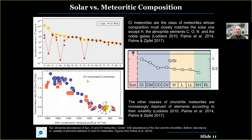This trend means that CV chondrites formed in a hotter environment than CI chondrites, so elements condensing at higher temperatures are more abundant than those condensing at lower temperatures. Extending the trend to all chondrite classes, the abundance of oxygen relative to silicon decreases the closer the meteorites formed to the sun. The colder the environment, the more primitive the material and the closer the ratio is to the solar value. However, the sun plots higher than CI chondrites, meaning there is a fraction of oxygen not accounted for by meteorites.